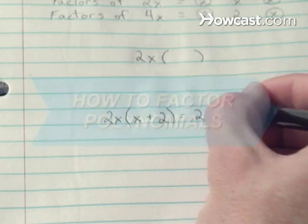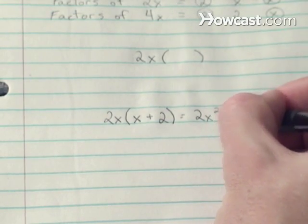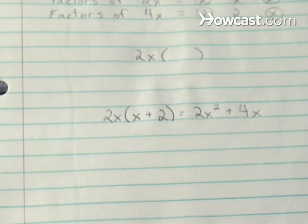How to Factor Polynomials. Factoring is the opposite of distributing. If you can find a common factor, you can reduce an expression.